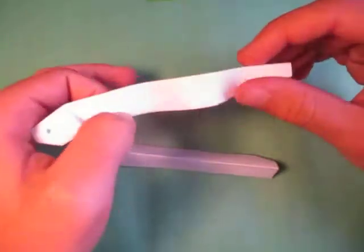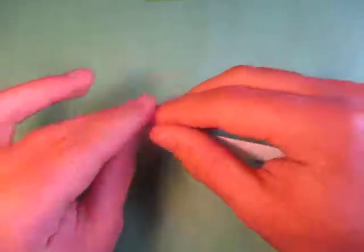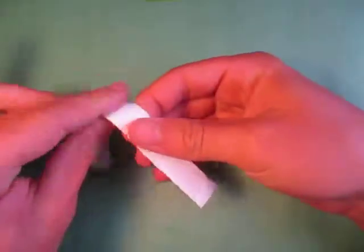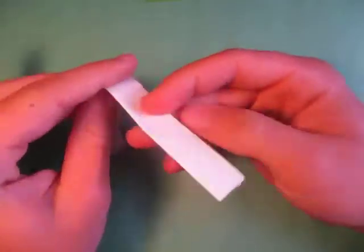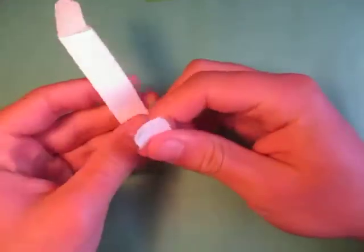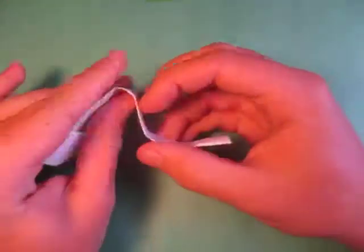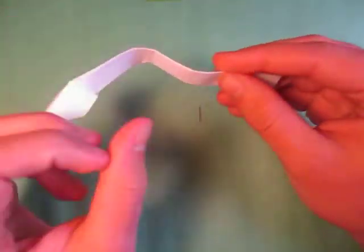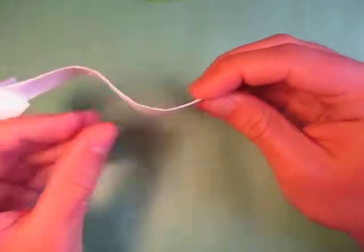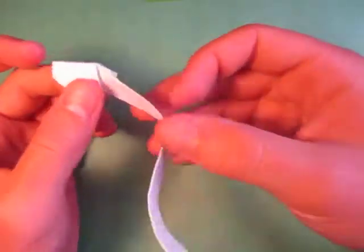Alright, now pretty much the last step is we're just going to kind of make it wavy like this, so it looks like an eel shape. So just kind of curve it up, maybe like this. Like that. Alright, so here we have the eel.